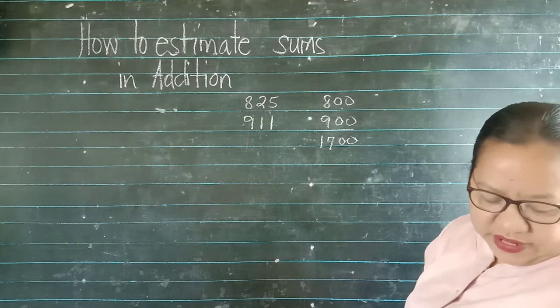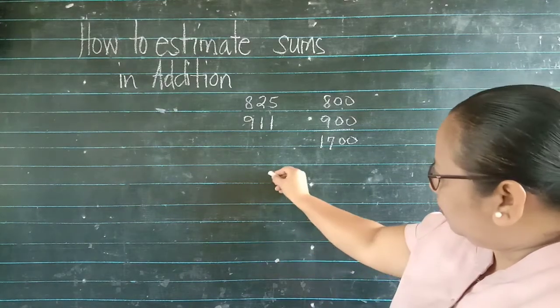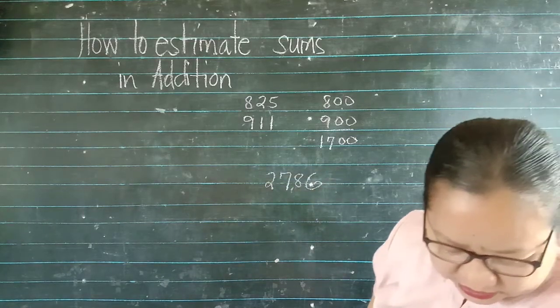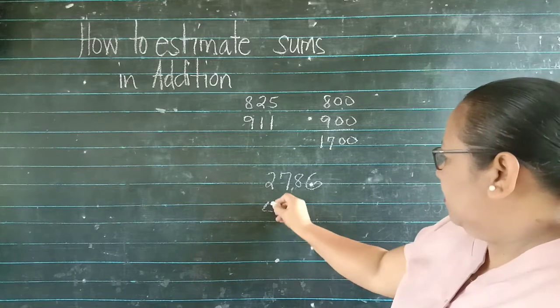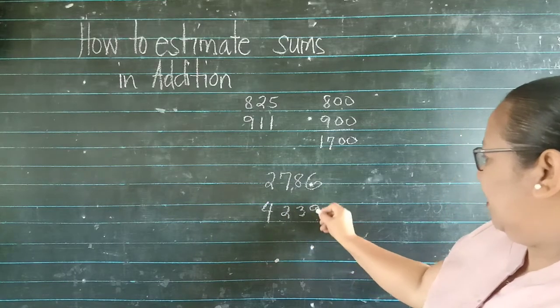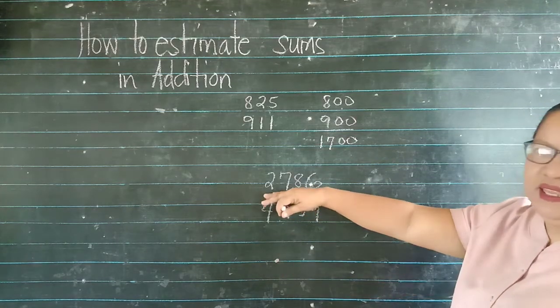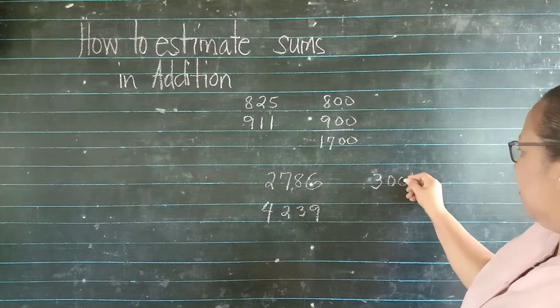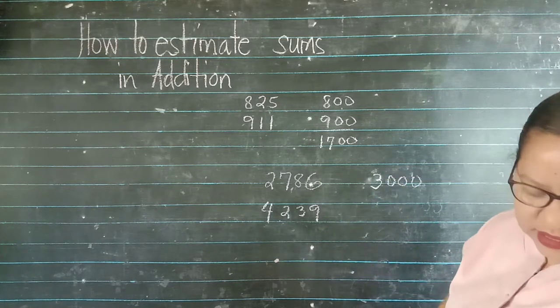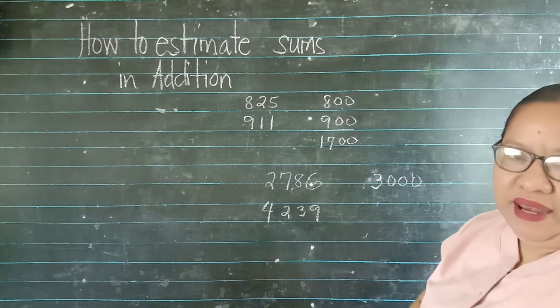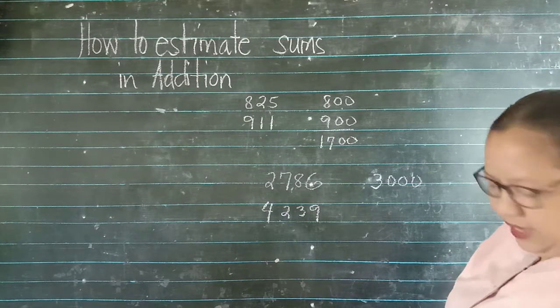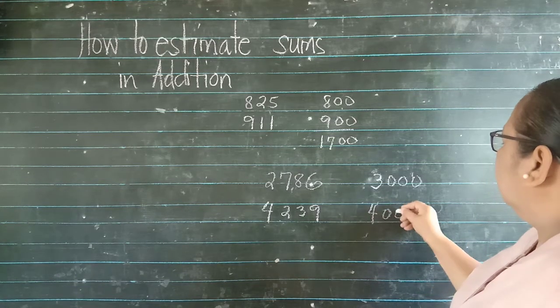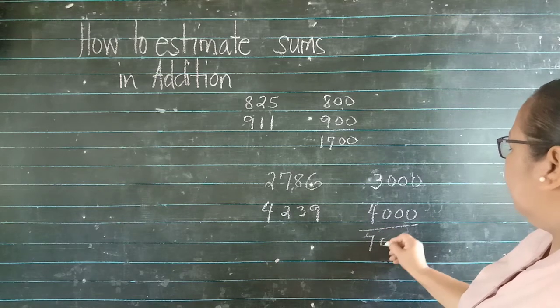Kapag nearest hundreds, we have 2,786. May nearest hundreds po tayo. Plus 4,239. What is the answer here pag inestimate natin? We have 3,000. Bakit po siya 3,000? 7 ang kanyang katabi. And we have 4,000. So the answer is 7,000.